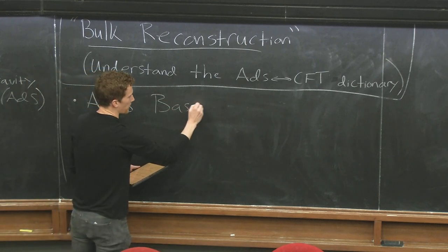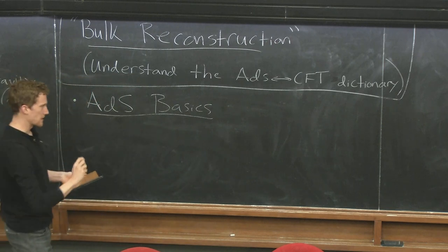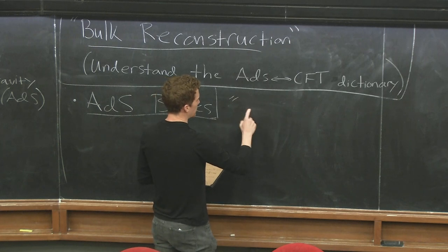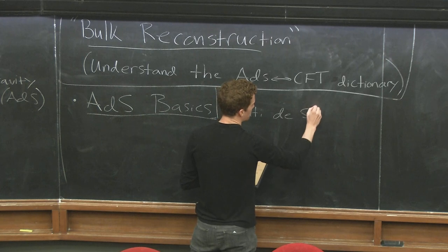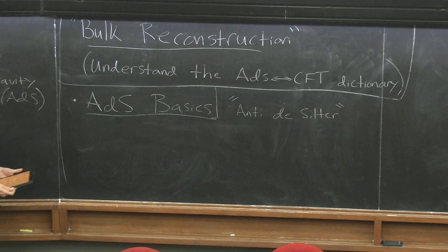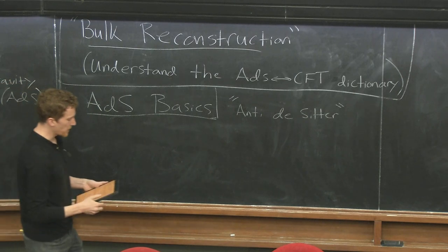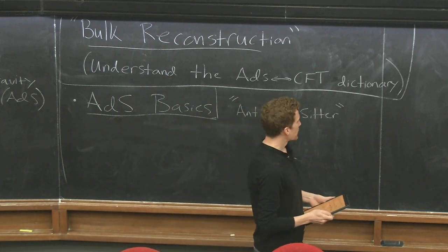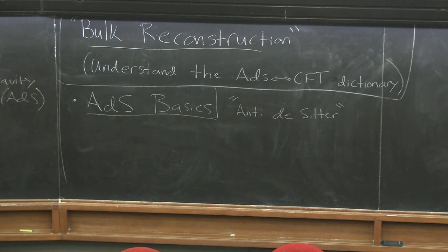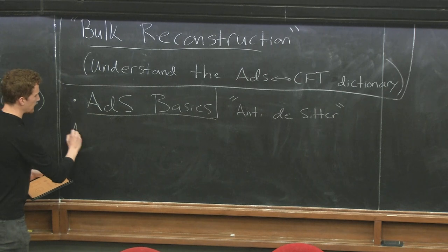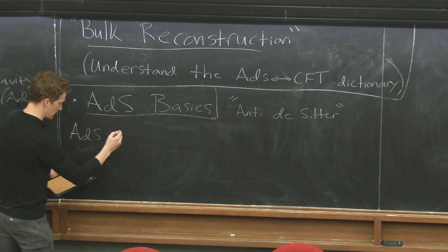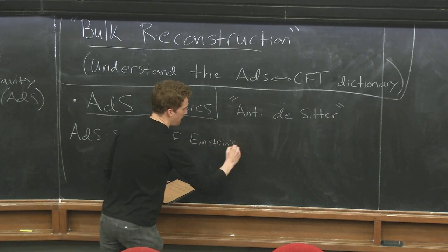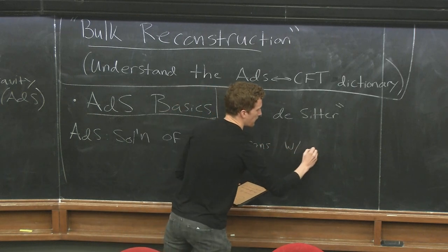Let me cover some of the ADS-CFT basics — first the ADS basics. ADS stands for anti-de Sitter space. In gravity we care about space-times that are solutions of Einstein's equations, and anti-de Sitter space is the maximally symmetric vacuum solution with cosmological constant λ < 0.